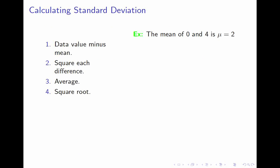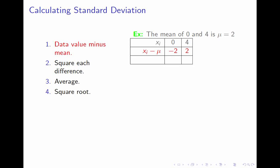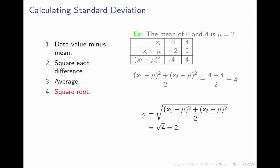Let me show you how to calculate the standard deviation in a very simple case. I have two data points: the numbers 0 and 4. The first step is to find the mean — the mean of 0 and 4 is (0 plus 4) over 2, which is 2. It's nice to make a little table. We take each data point minus the mean: 0 minus 2 is negative 2, 4 minus 2 is 2. The second step is to square each of those numbers: negative 2 squared is 4, 2 squared is 4. Third step is to average them — the average of 4 and 4 is 4. And finally, we take the square root and we get 2.